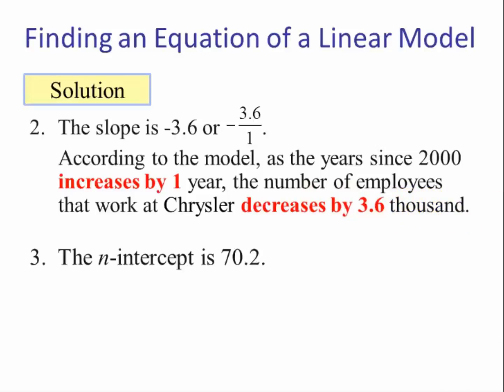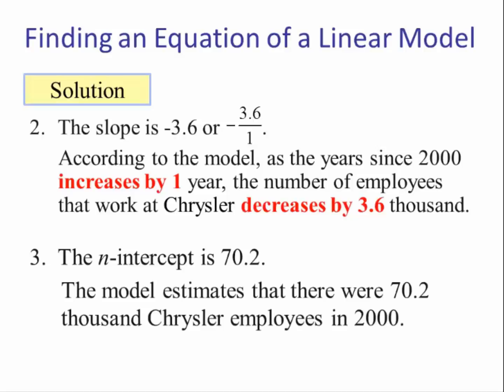Number 3: the N-intercept is 70.2. The Y-intercept is the value of Y when X is 0, so for this problem the model estimates that there were 70.2 thousand Chrysler employees when T = 0, which is the year 2000.